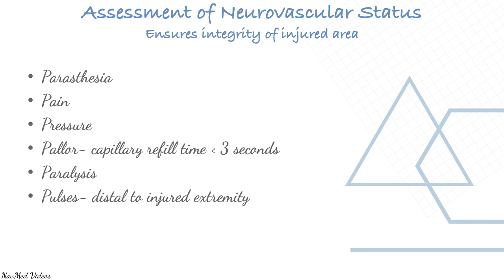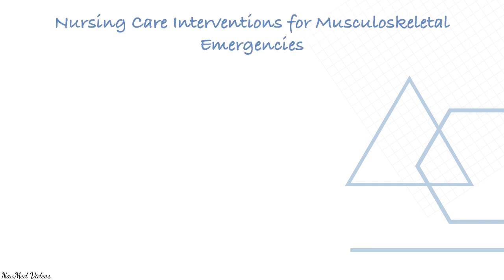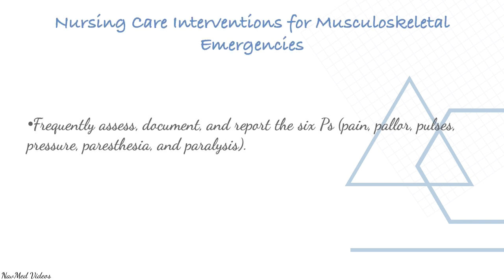Assessment of neurovascular status ensures integrity of the injured area. Remember the six P's: pain, paraesthesia, pressure, pallor, paralysis, and pulses. From the nursing care perspective, frequently assess, document, and report the six P's, and report any change in status.